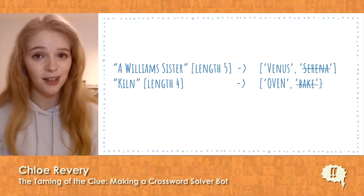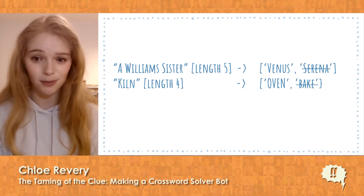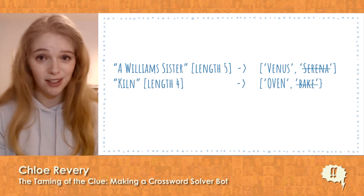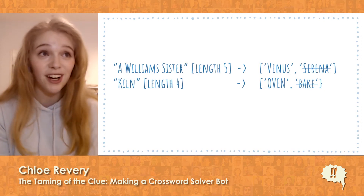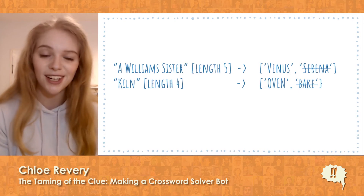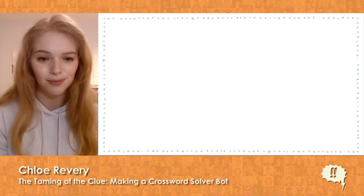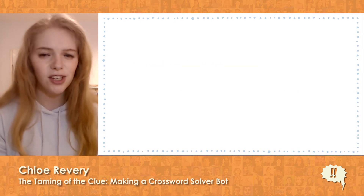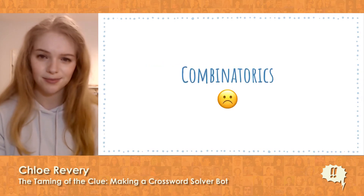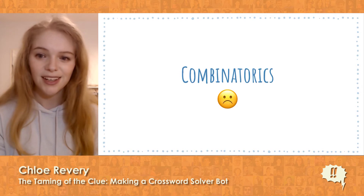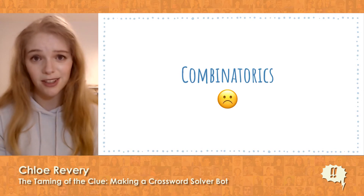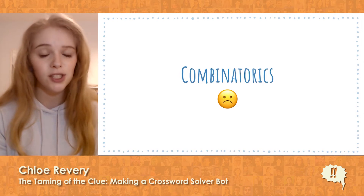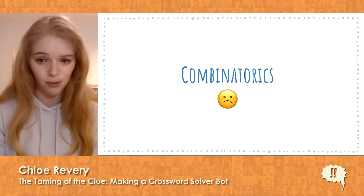So now we have a much narrower set of answers to play with, and to get the solution to the puzzle, all we need to do is mash together every possible answer with every other possible answer until we get a grid that works. There's just one problem with that — even a small crossword turns out to be pretty big, and there are just too many combinations to efficiently brute force this problem.